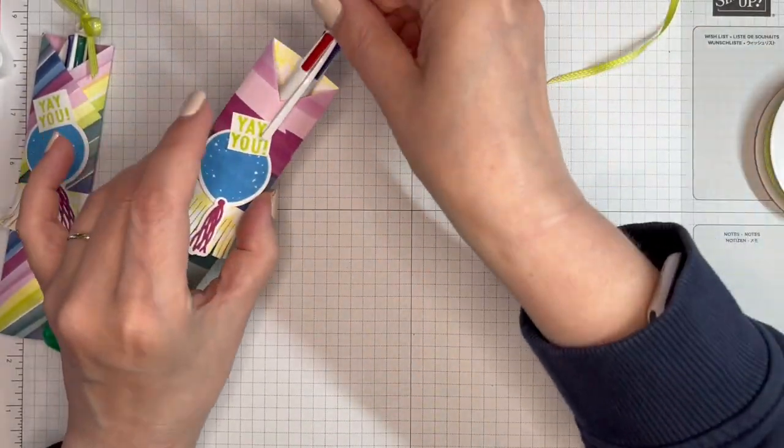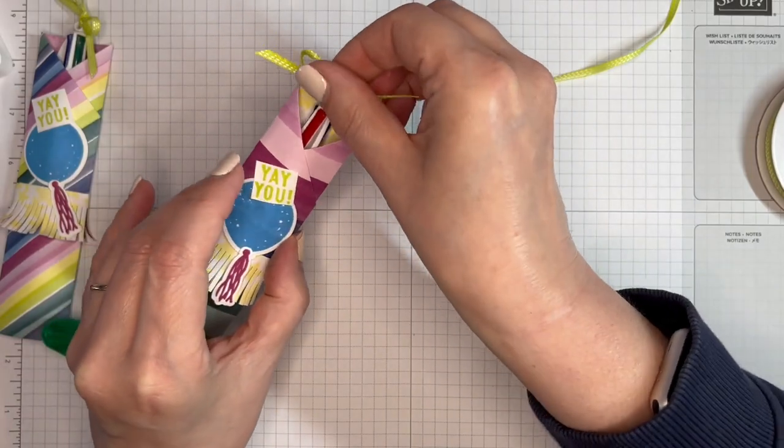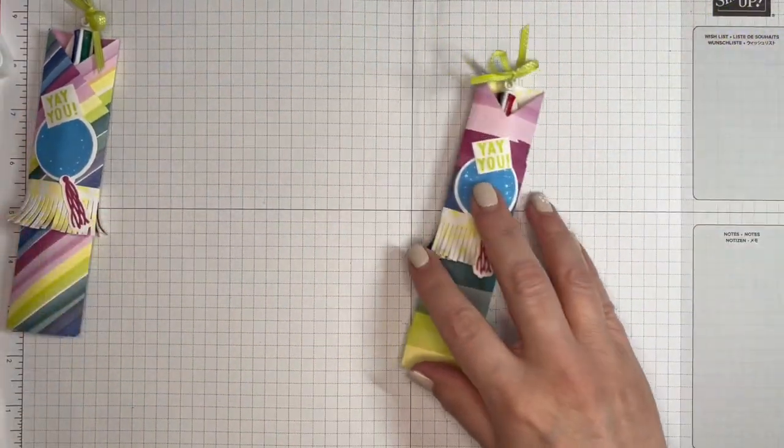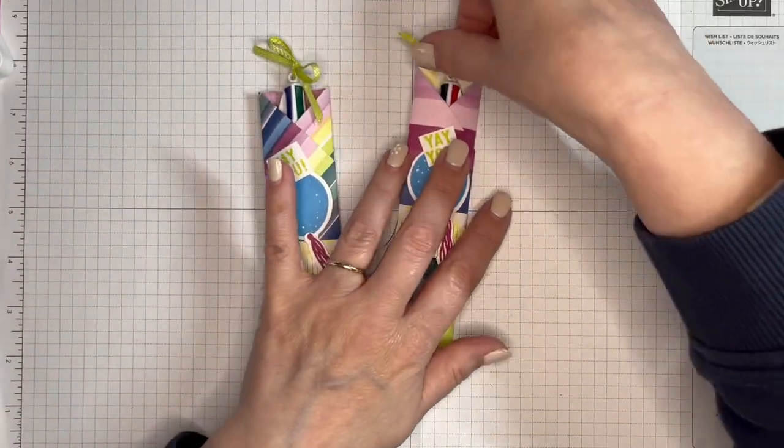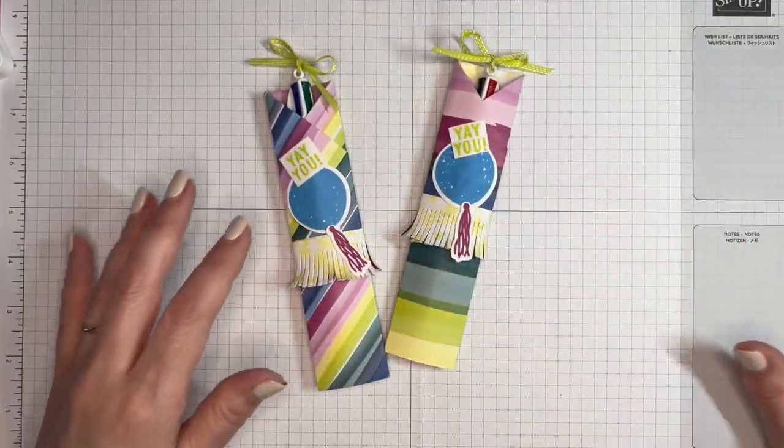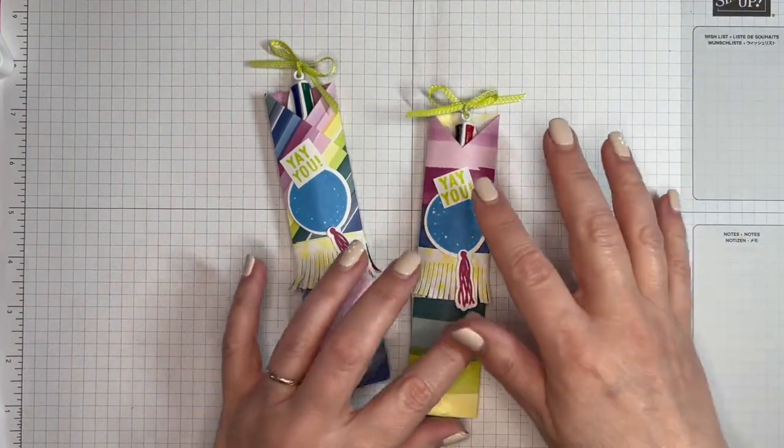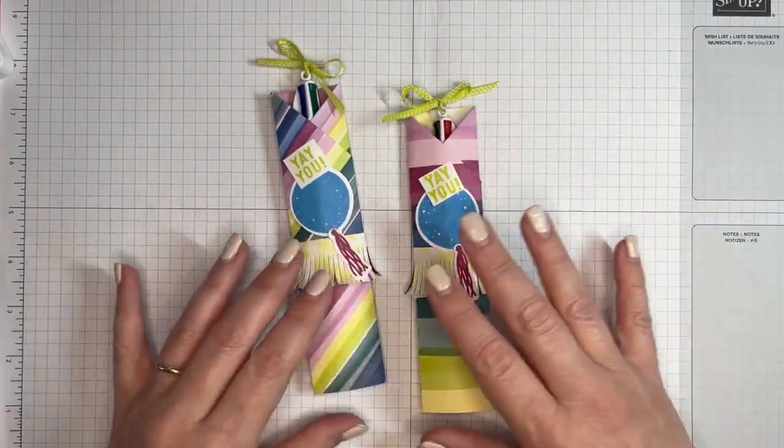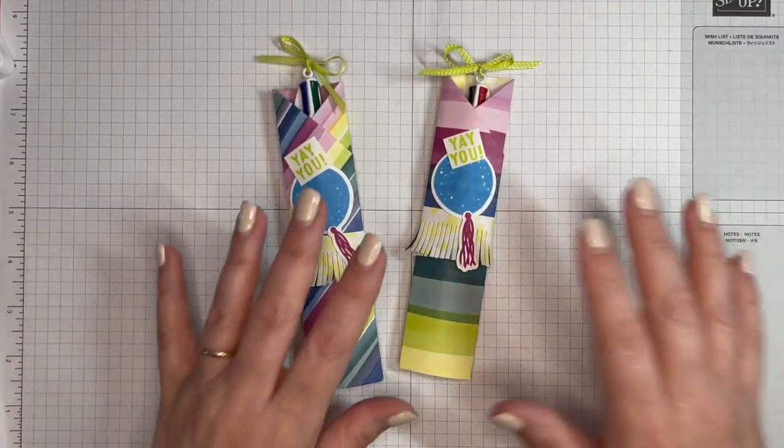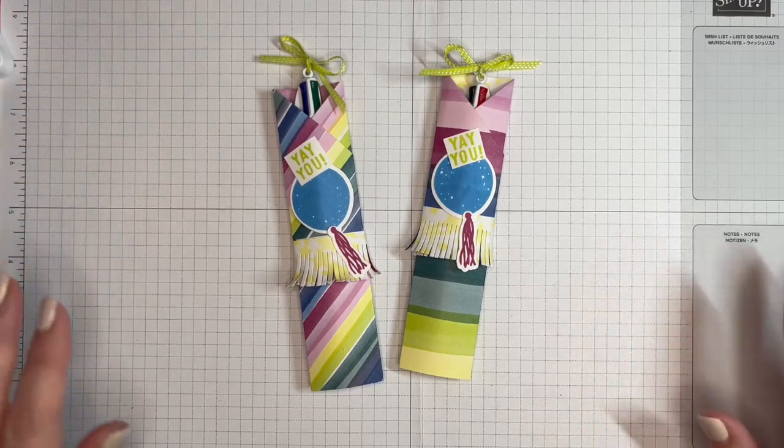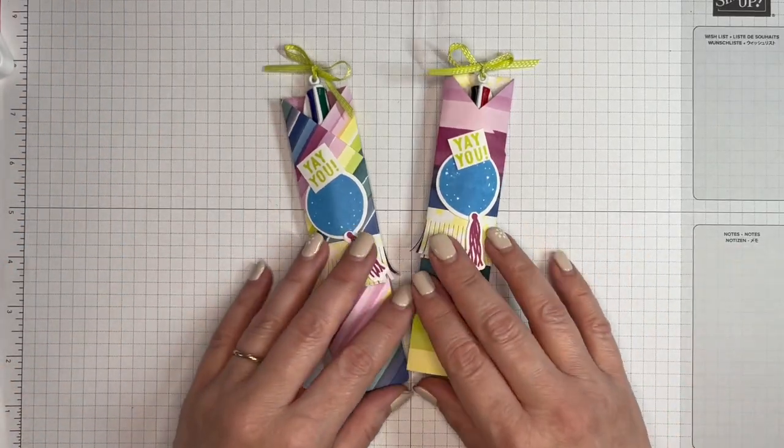And there you have it, a cute little fun gift with Bright and Beautiful Designer Series paper and Beautiful Balloons stamp set and dies. When you buy the stamp set and dies you can purchase them as a bundle and you'll receive a 10% discount.